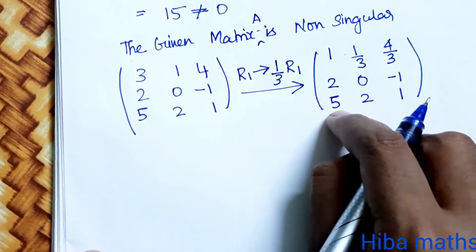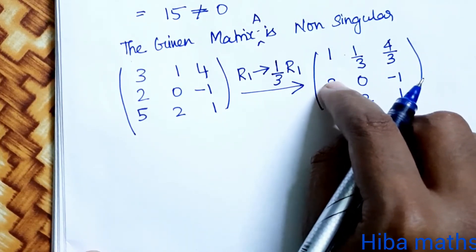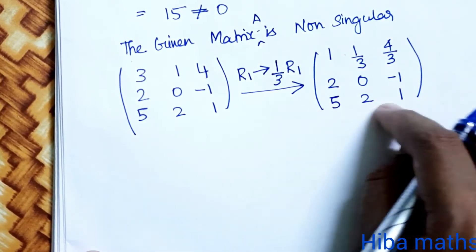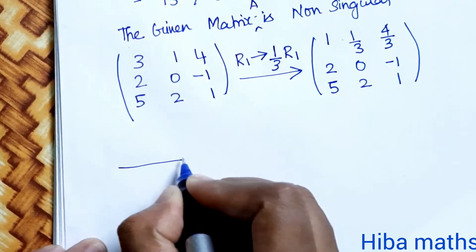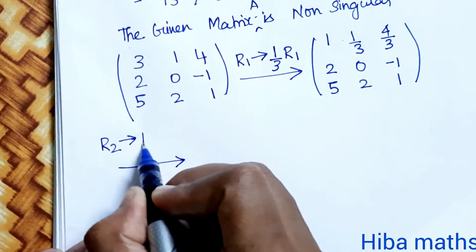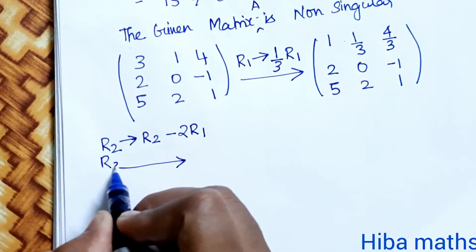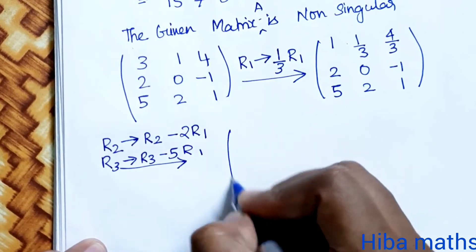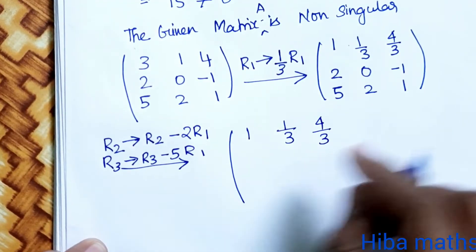The first column element of R2 is 2, so R2 changes to R2 minus 2 times R1. The first column element of R3 is 5, so R3 changes to R3 minus 5 times R1. R1 remains as [1, 1/3, 4/3].